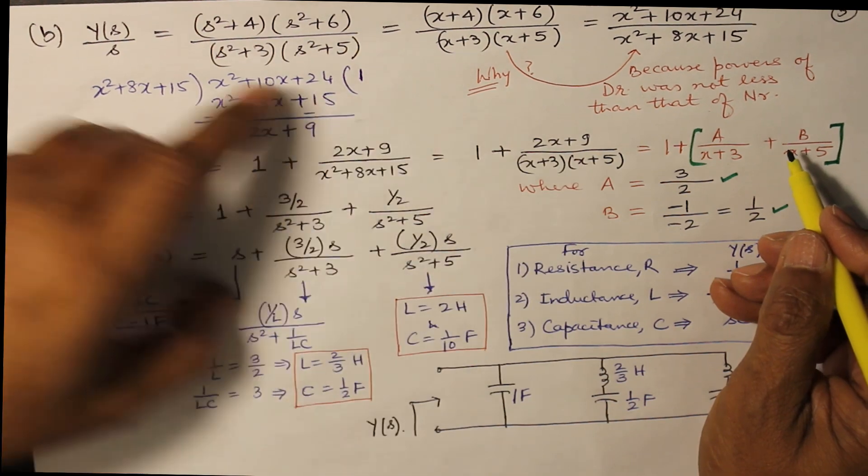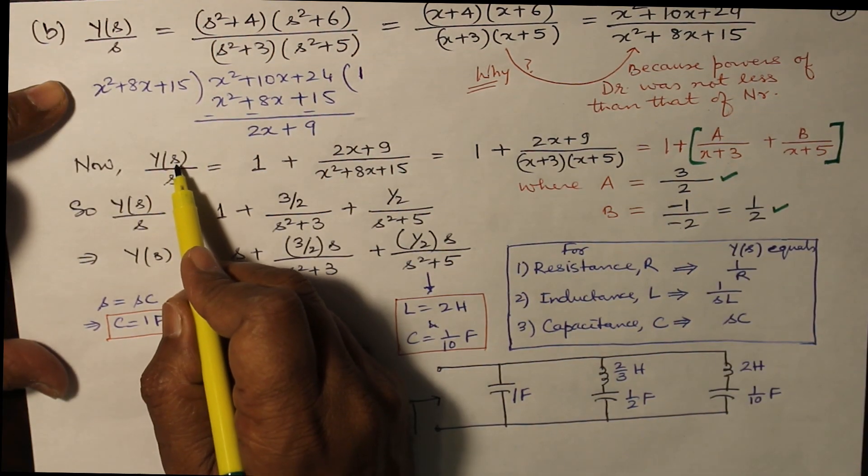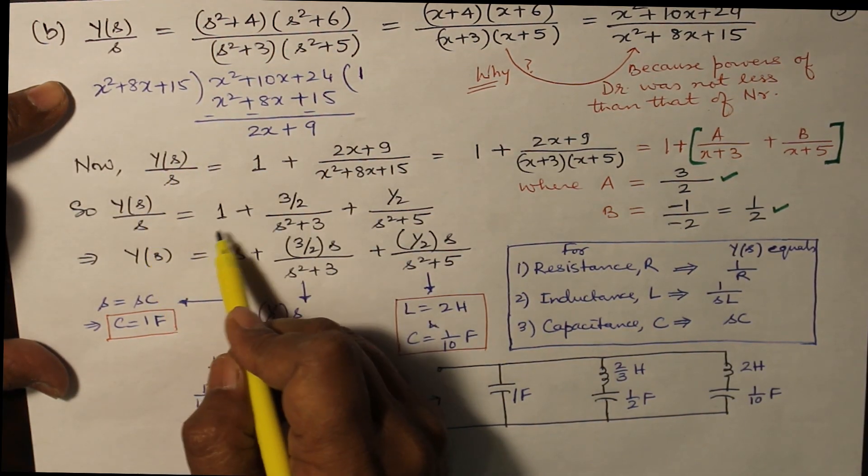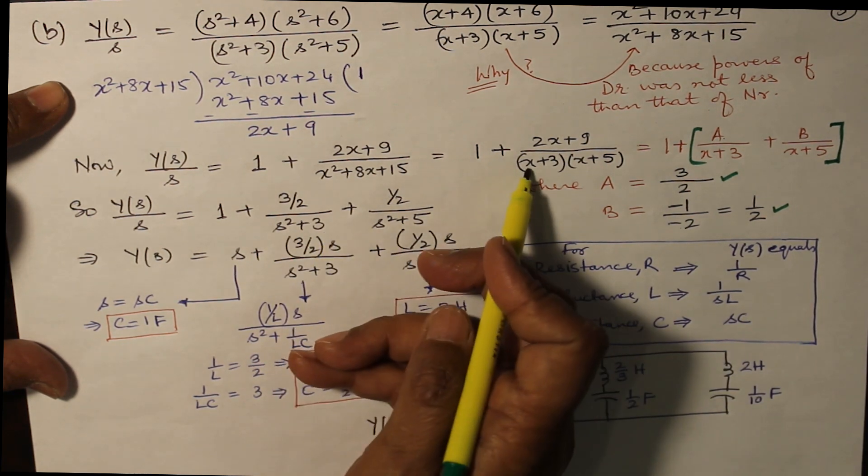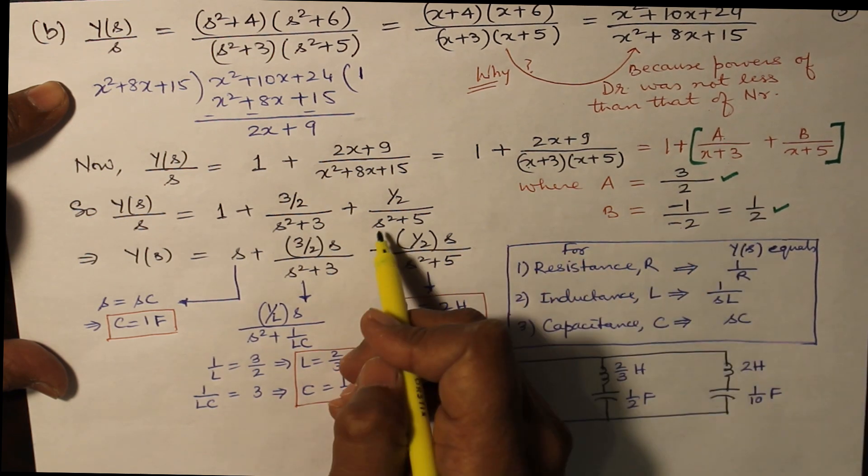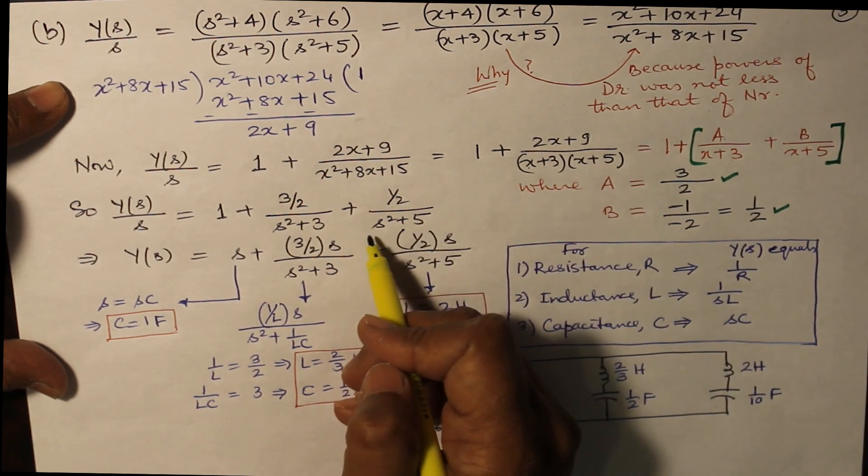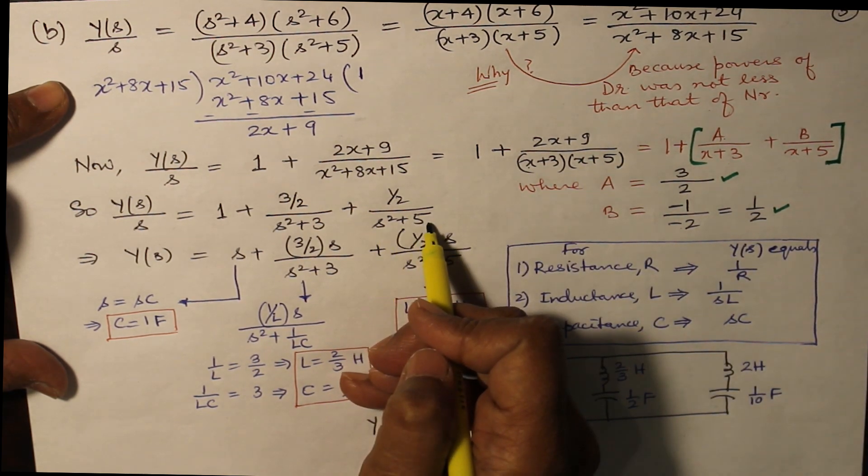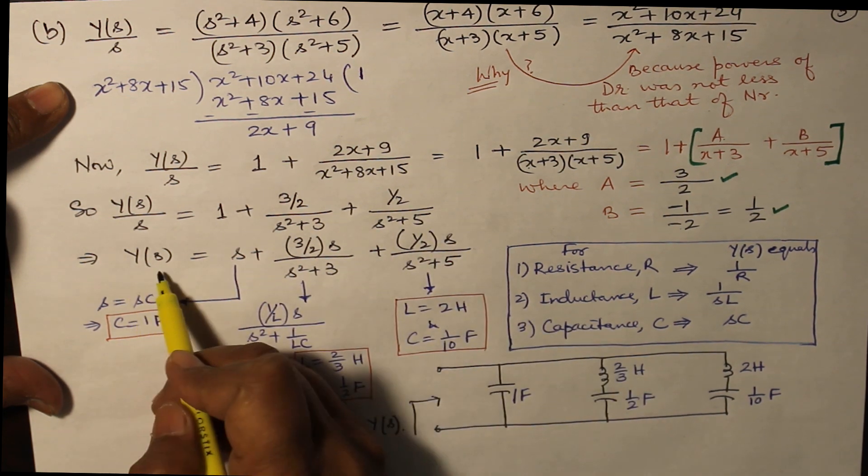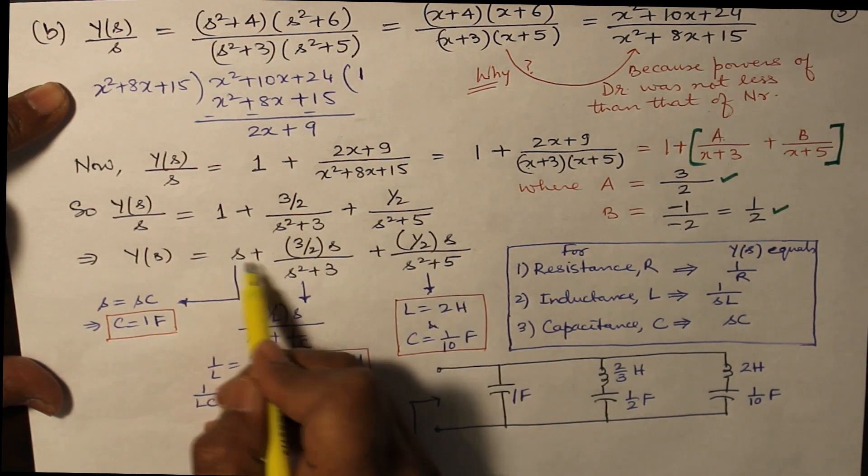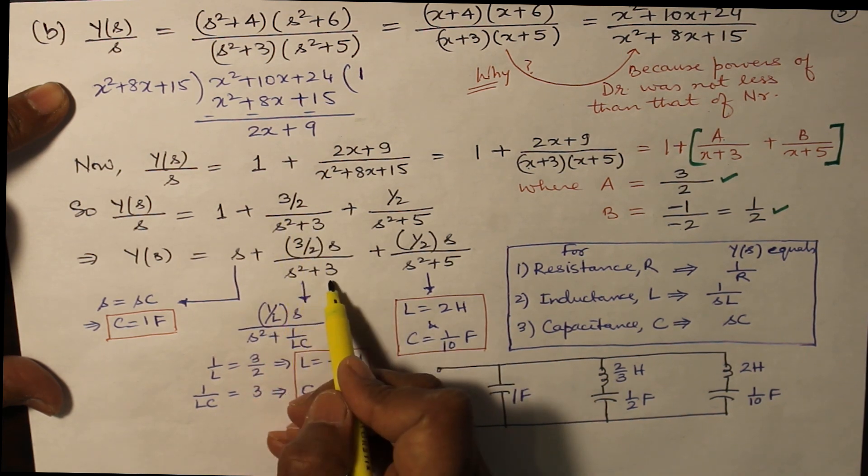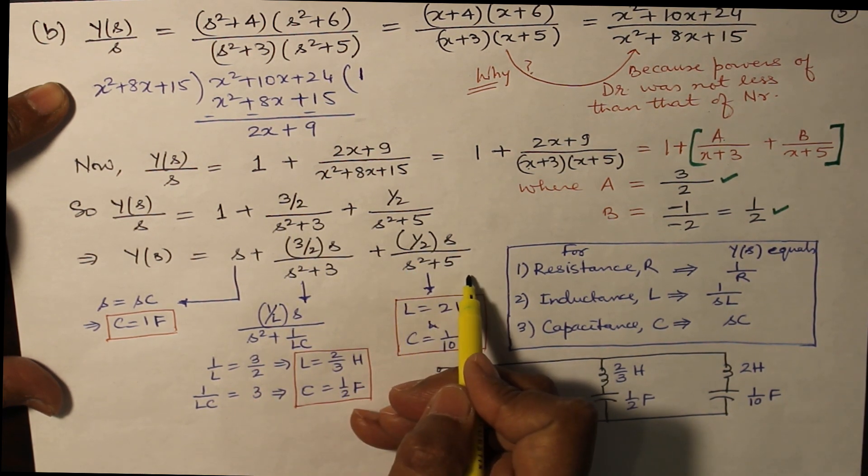So both these values you put back into the value. Y(s)/s is 1 + (3/2)/(s²+3), putting x as s², and 1/2 over again x+5 ki jagah, s²+5. So you have Y(s) equals s - I multiply katiya throughout - s + (3/2)s/(s²+3) + (1/2)s/(s²+5).